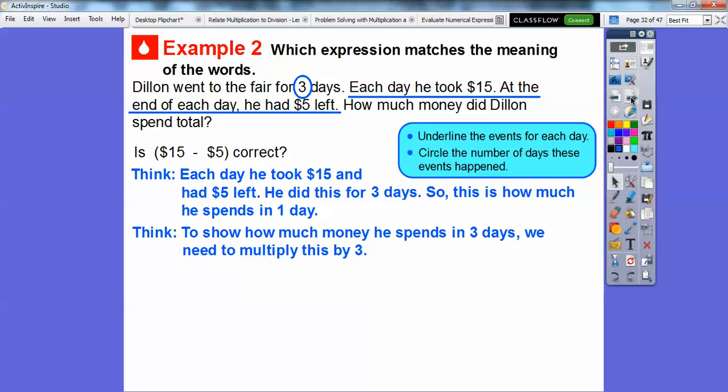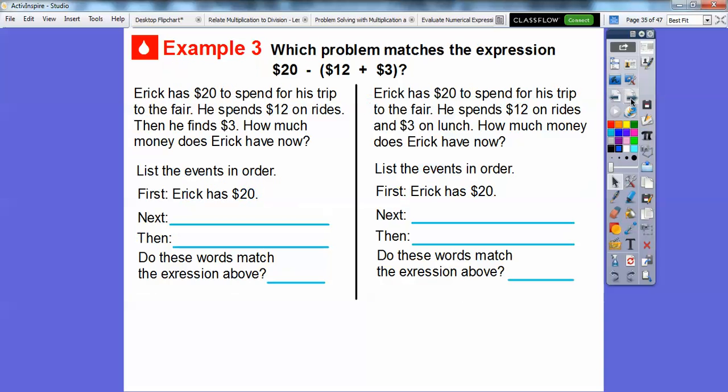So we need to show how much money he spent for three days. We're going to take this one day and multiply it by three. So Dylan spent, we're just going to take this expression and multiply it by three. And so he did three times the quantity, we'd say. Quantity is in parentheses. Three times parentheses 15 minus 5. So it's not asking how much he spent at all. It's just asking to write an expression.